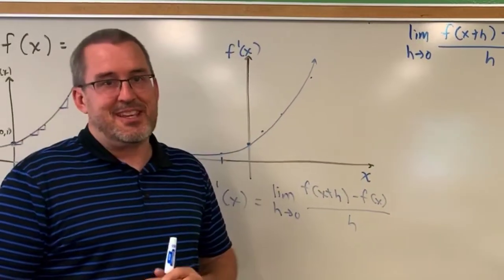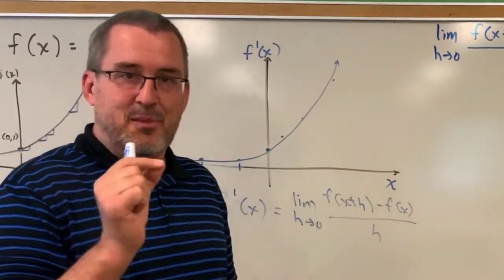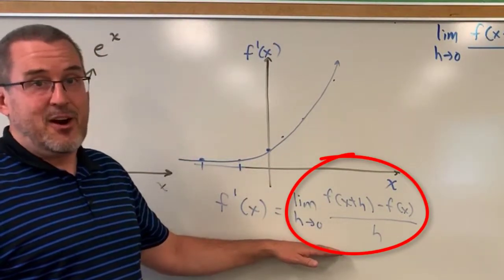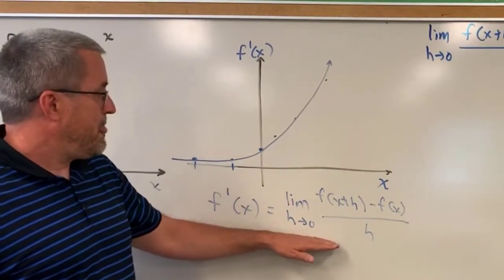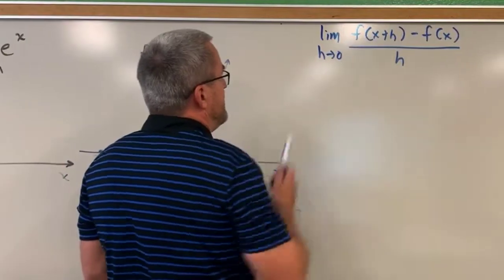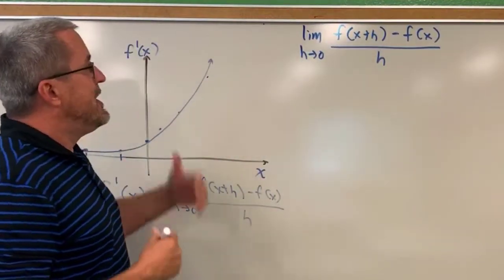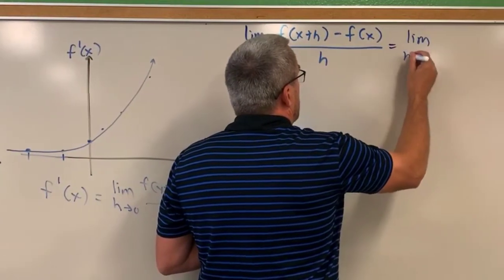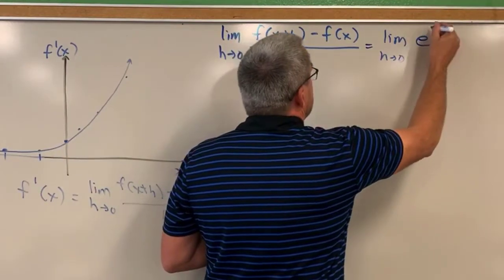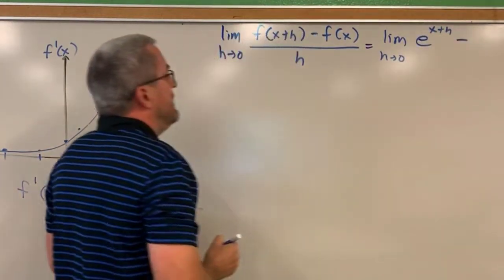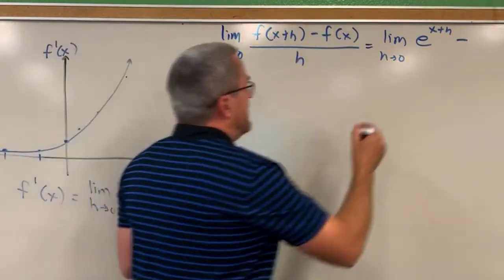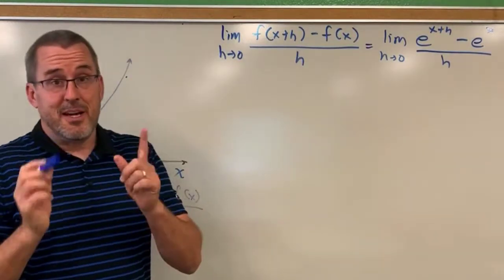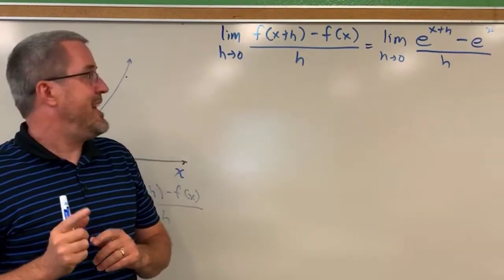So you're probably pretty well convinced now that the derivative of e to the x really is e to the x. The Desmos simulation allows you to see how that works out. But now let's take it a little more old school here. Let's go back to that limit definition of derivative and see how it plays out. The limit definition of derivative — we first need to find f of x plus h. Our function is f of x equals e to the x, and so f of x plus h is going to be e to the x plus h.